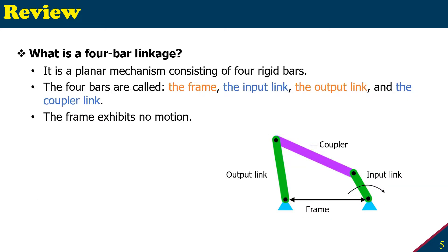A four-bar linkage is a planar mechanism consisting of four rigid bars. The four bars are called the frame, the input link, the output link, and the coupler link, which connects the input and output links. The frame exhibits no motion.